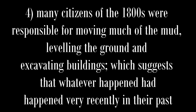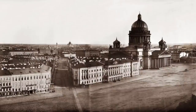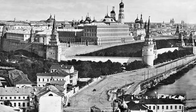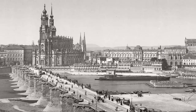Many of the photographs show citizens of the 1800s responsible for moving much of the mud, leveling the ground, and excavating buildings, which suggests that whatever happened had happened very recently in their past. The complete absence of a reasonable mainstream justification for the buried architecture suggests that the controllers of our realm are deliberately trying to hide whatever happened. And what of the deserted cities we see in the earlier photographs? If these cities were truly empty, then we must ask why, and how all the people got there — in the space of 30 or so years, a city goes from barren to bustling.